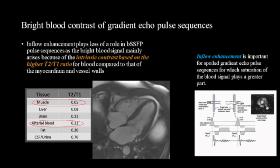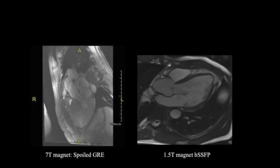In an SSFP sequence, the intrinsic contrast is due to the higher T2/T1 ratio of blood as compared to the myocardium and the vessel walls.